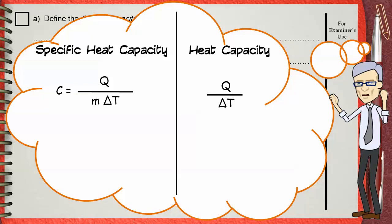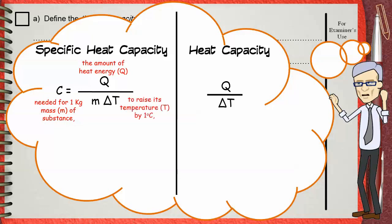We will define both according to the equation. Specific heat capacity is the amount of heat energy needed for 1 kilogram mass of the substance to raise its temperature by 1 degree Celsius. But heat capacity, or thermal capacity, is defined as the amount of heat energy needed to raise the temperature of the whole body — not of 1 kilogram of the body — by 1 degree Celsius.